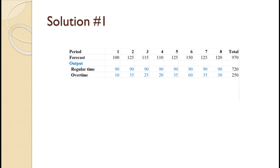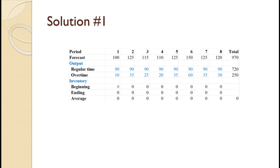Since you've seen numerous examples of calculating inventory in prior tutorials, let me suggest that you pause the video and try to calculate the inventory on your own. Once you're done, you can use the video to check your work and spot any mistakes you might have made. The slide shows the inventory calculations. As you can see, beginning, ending, and average inventory values are all zero for all periods. This will always be the case for a pure chase strategy with no beginning inventory.